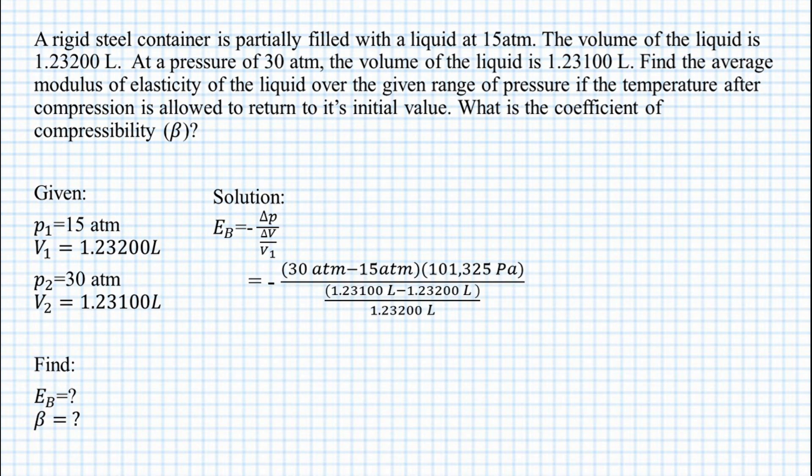Then plug in the values, we have negative value of 30 atm minus 15 atm multiplied by the constant of atmospheric pressure which is 101,325 pascals over the value of volume which are 1.23100 liter minus 1.23200 liter over the volume 1 which is 1.23200 liter.